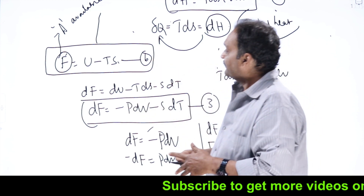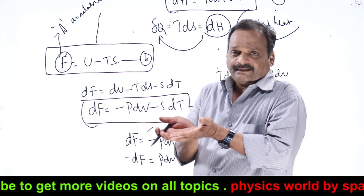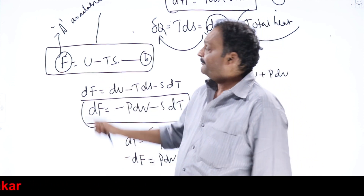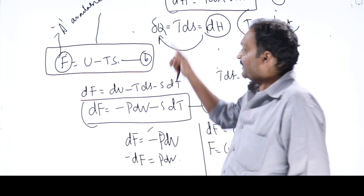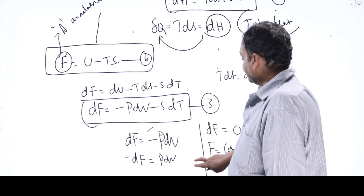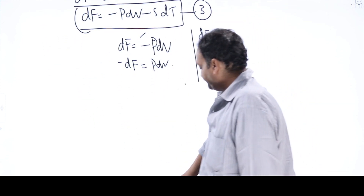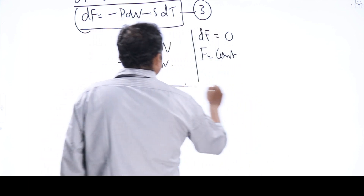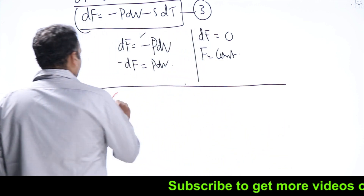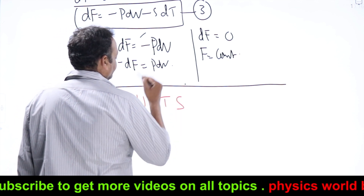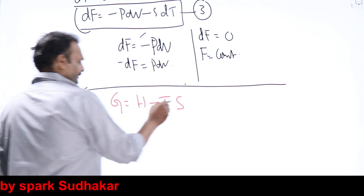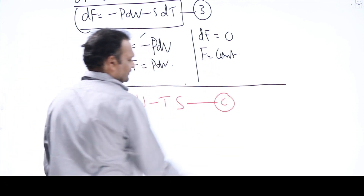Enthalpy H equals U plus PV — keep that in mind. Helmholtz free energy F is defined as U minus TS — remember that. Next, we go to the last thermodynamic potential: Gibbs free energy. Gibbs free energy G is defined as G equal to H minus TS. This is how Gibbs free energy has been defined — I'll call this expression equation C.